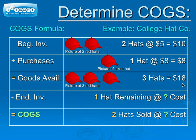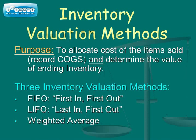During the month, two hats were sold to customers, and there was one hat remaining in the ending inventory. This brings up the question: what is the cost of the one hat remaining in ending inventory, and what is the total cost for the two hats that were sold? The answer depends on which inventory valuation method is utilized. The purpose of utilizing an inventory valuation method is to allocate the cost of the items sold in order to record the cost of goods sold on the income statement, and determine the value of ending inventory reported on the balance sheet.